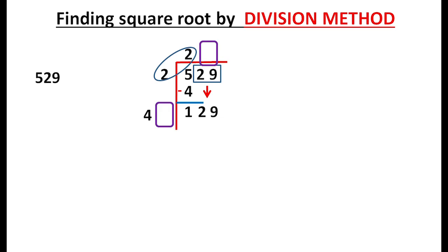If we are using the square root division method, we fill in a box. The method is to fill in the form: 41, 42, 43, and so on. That number must be the same. If we multiply this way, we get 129.